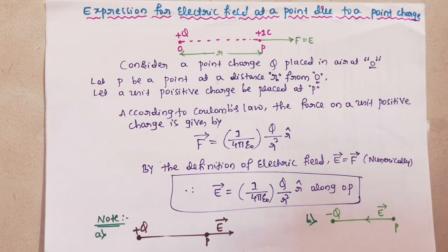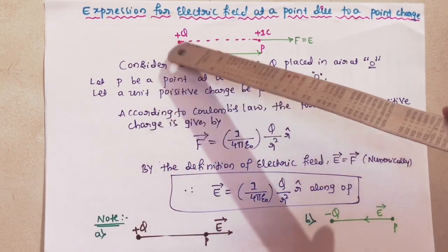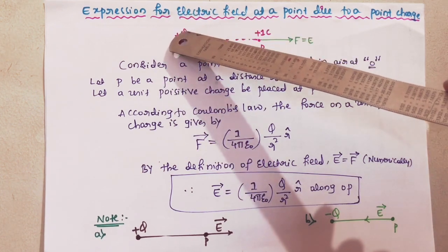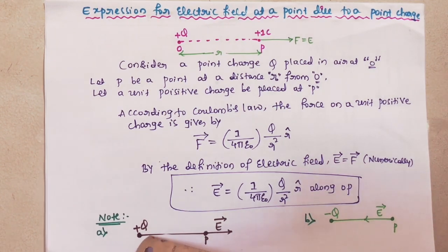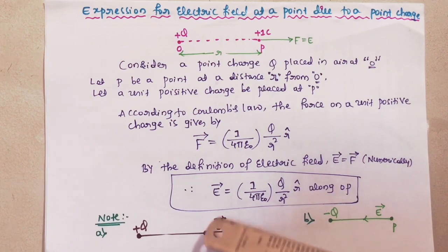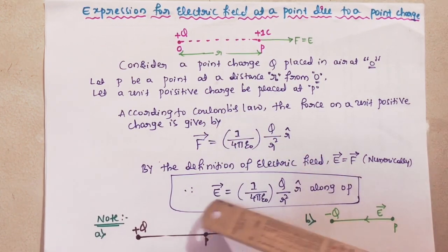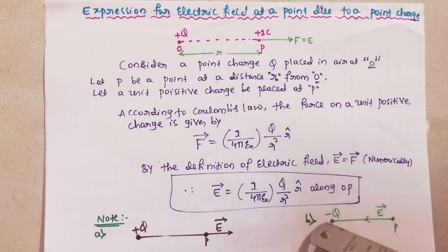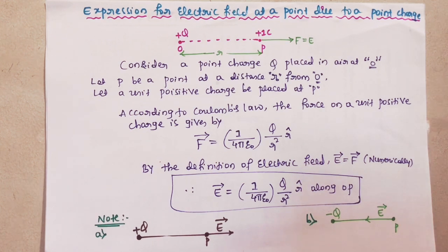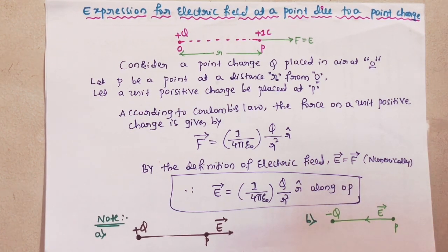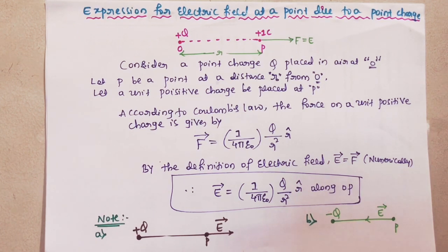If the source charge Q is positive, the direction of electric field or electric intensity at point P will be away from the source charge. If the source charge Q is negative, then the direction of electric field E at point P will be towards the source charge. So: positive charge — electric field points away; negative charge — electric field points towards the source charge.